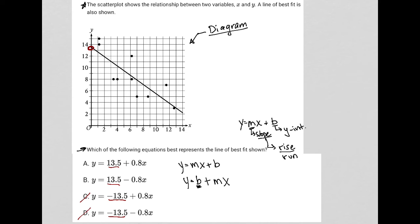How am I getting from the y-intercept down to this last point over here? I'd go down, so my rise would be negative. And then I'm running to the right, which is in a positive direction.